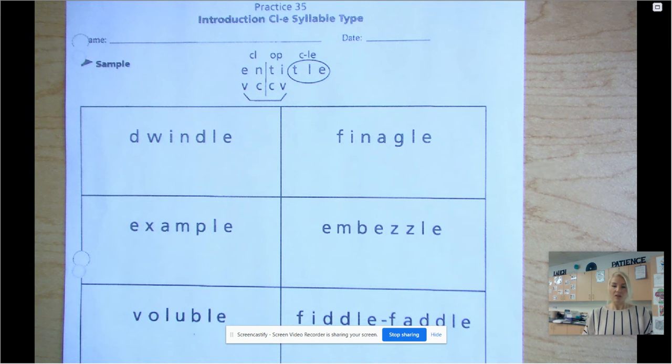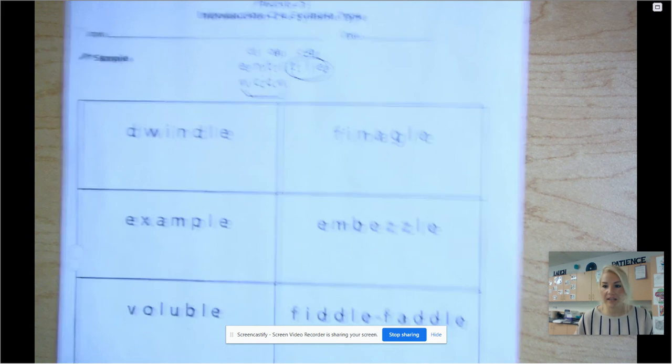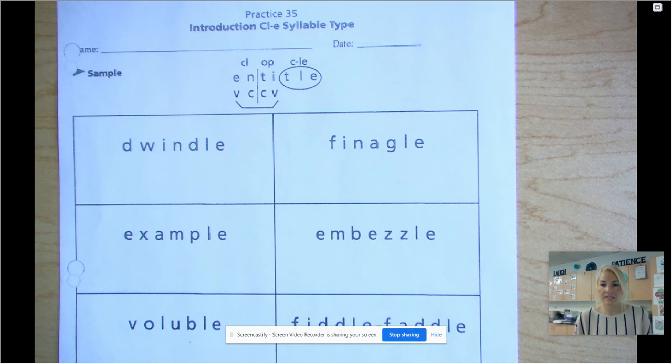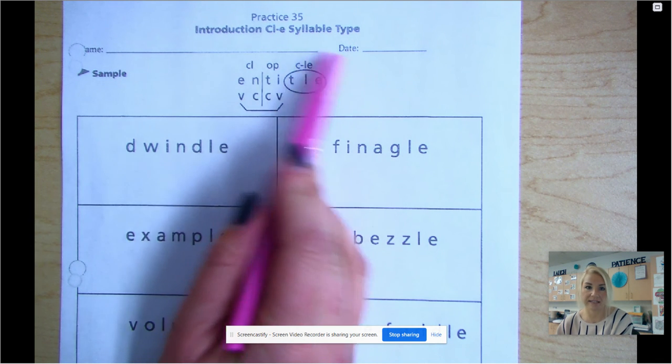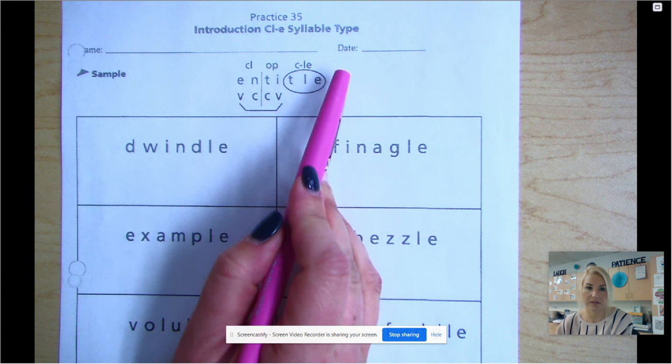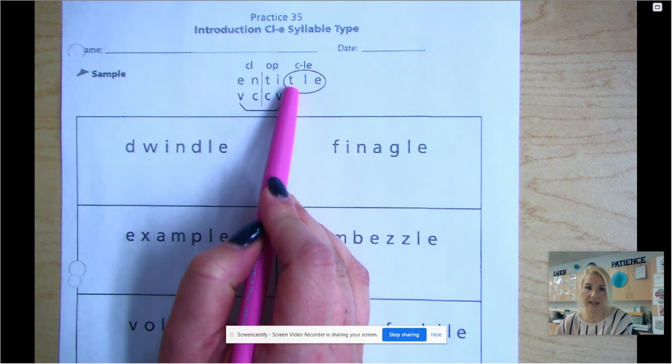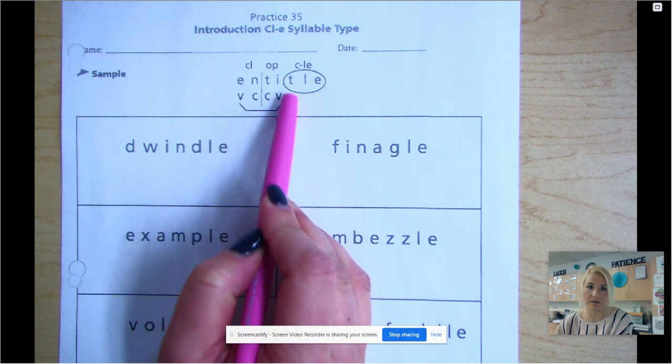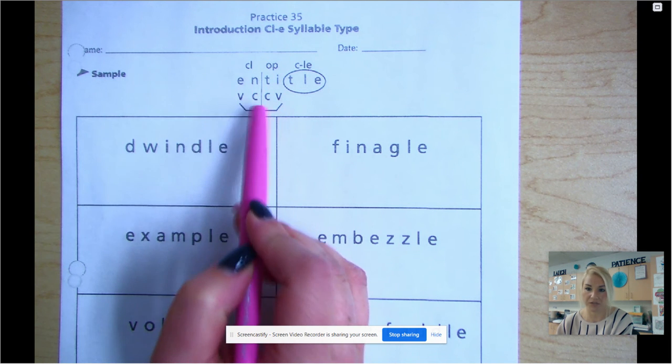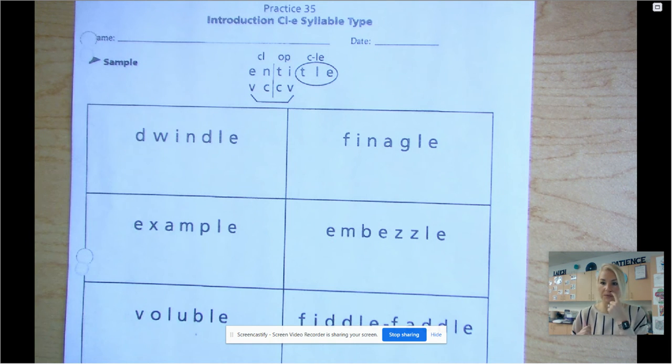So with consonant-LE, it works similar to suffix endings or magic E. We want to label them first before we finish the syllabication. If you look up at the sample here, they labeled their consonant-LE first. The consonant is a T and then it ends with an LE. And then they finished off the rest of their syllabication, like finding the vowels, drawing the bridge.